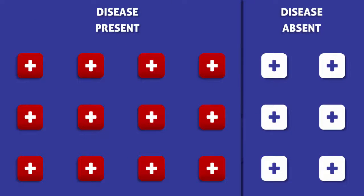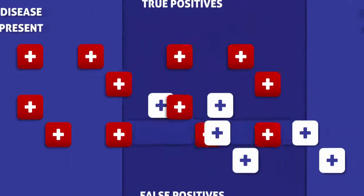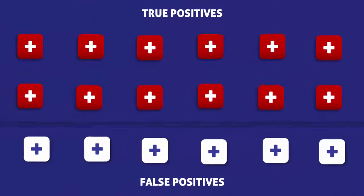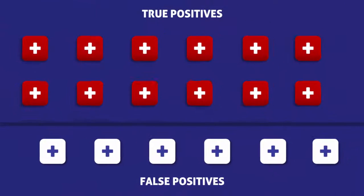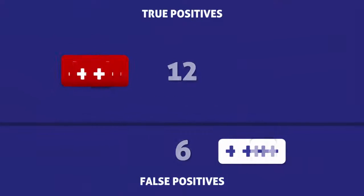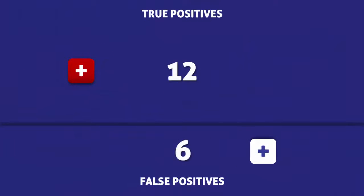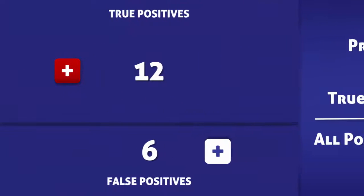The red squares represent people who have the disease, and the white squares represent people who don't. Counting the squares, we find that there are 12 true positives and 6 false positives.